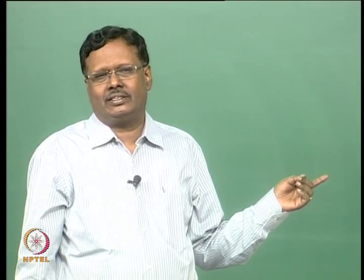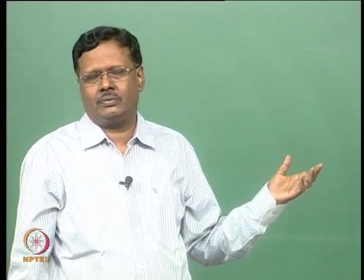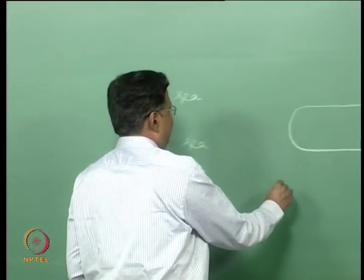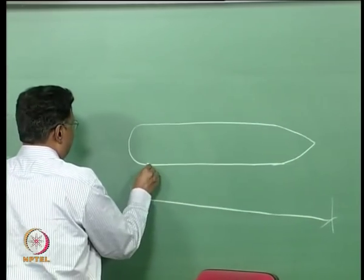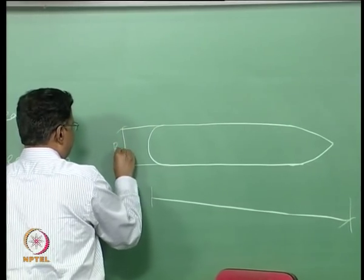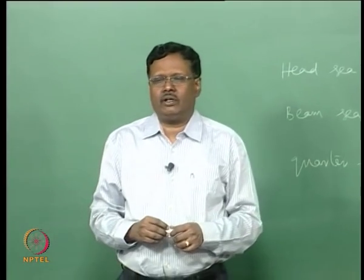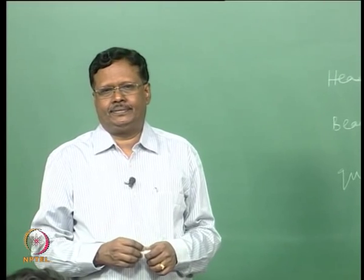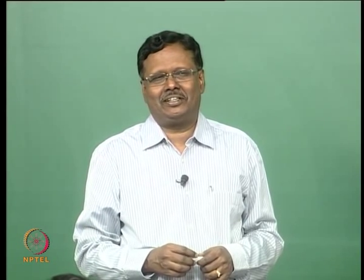The second point is the dimension should be proportionate. This is the length of the ship, and this is called the beam of the ship. From this figure, can you tell me approximately what will be the ratio of length to beam? It should be one to seven.